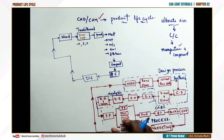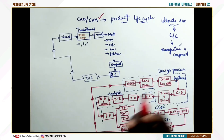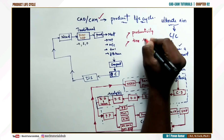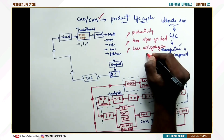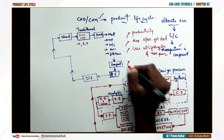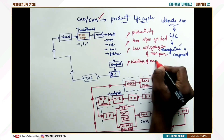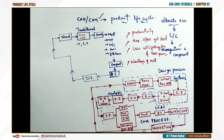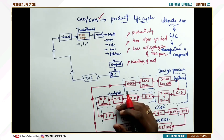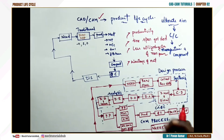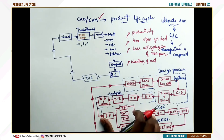With the introduction of CAD/CAM in the product life cycle, there have been many improvements: productivity has increased, time span has been reduced, and there is less utilization of manpower. Wastage of material is minimized — only required material is procured. Accuracy and precision have also increased. These are the key differences between the traditional product cycle and the CAD/CAM-based product cycle.